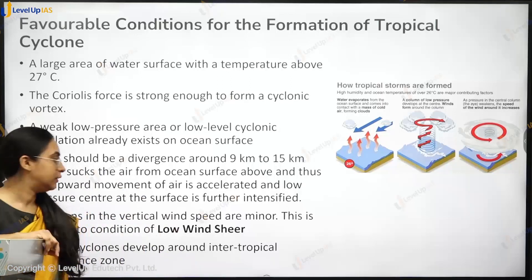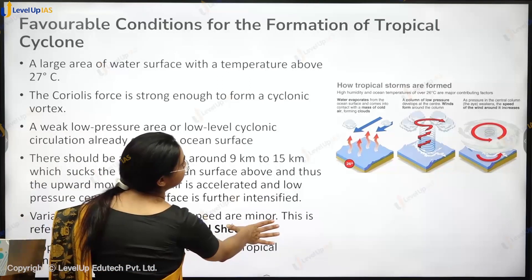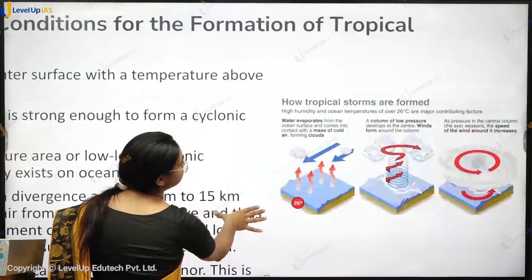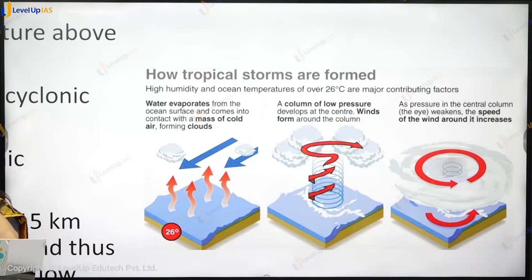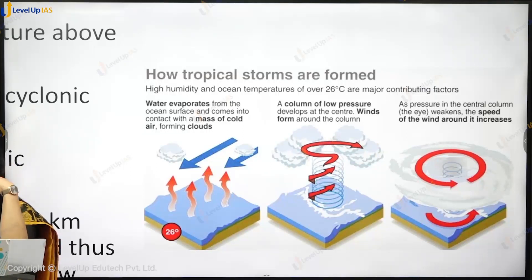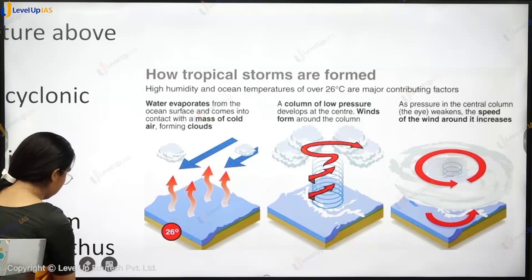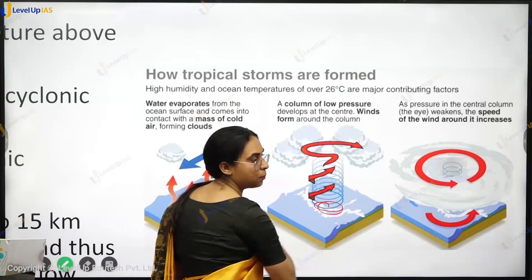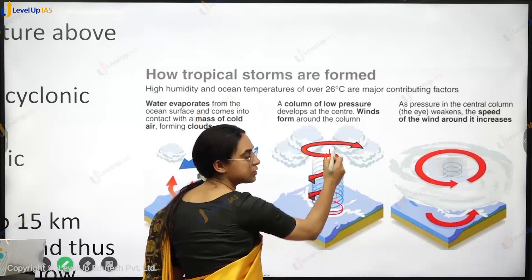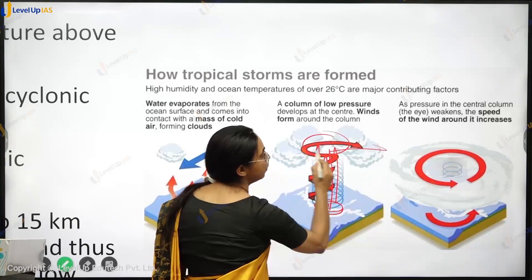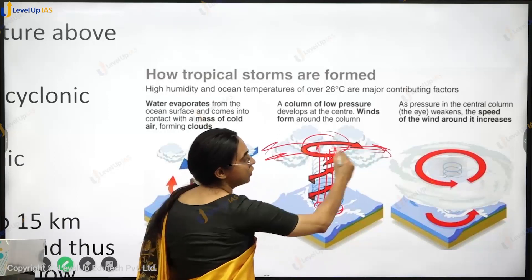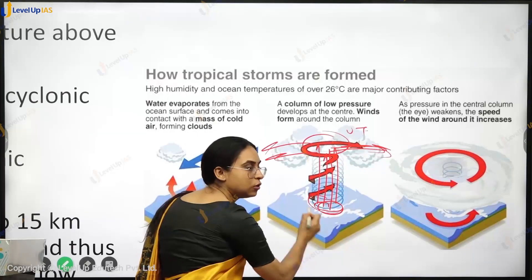Condition four: there should be divergence at around 9 to 15 kilometres altitude. If there is a low pressure and air is continuously rising, there must be divergence at the upper troposphere near the tropopause. If there is no divergence in the upper troposphere, the low pressure cannot sustain.